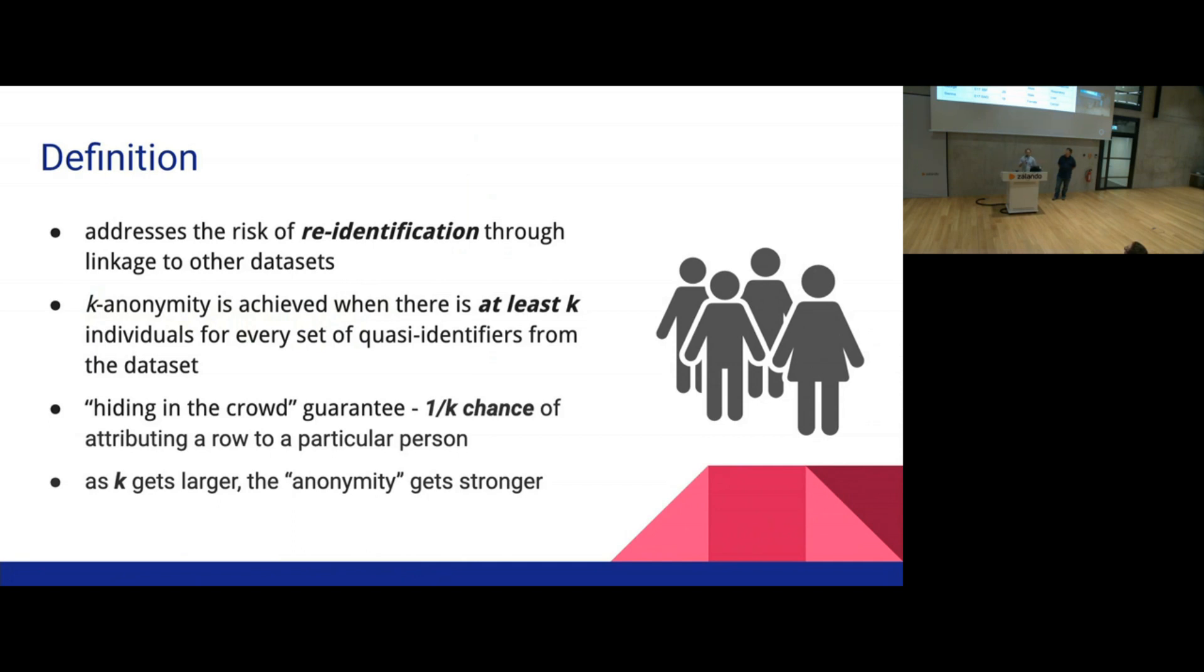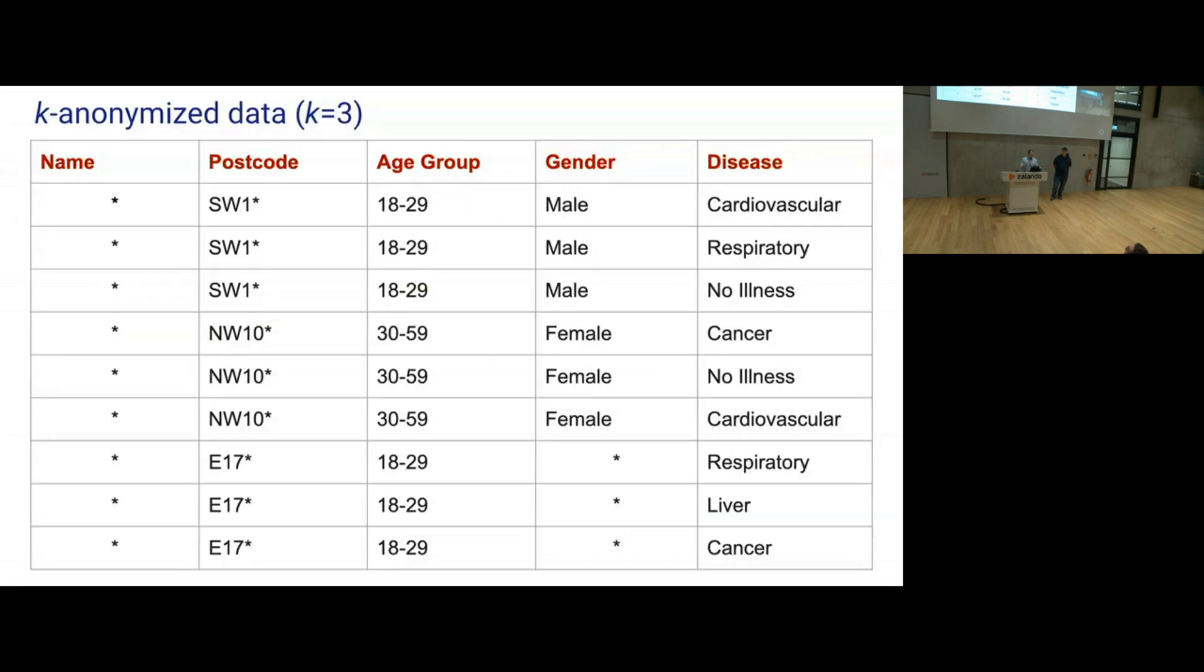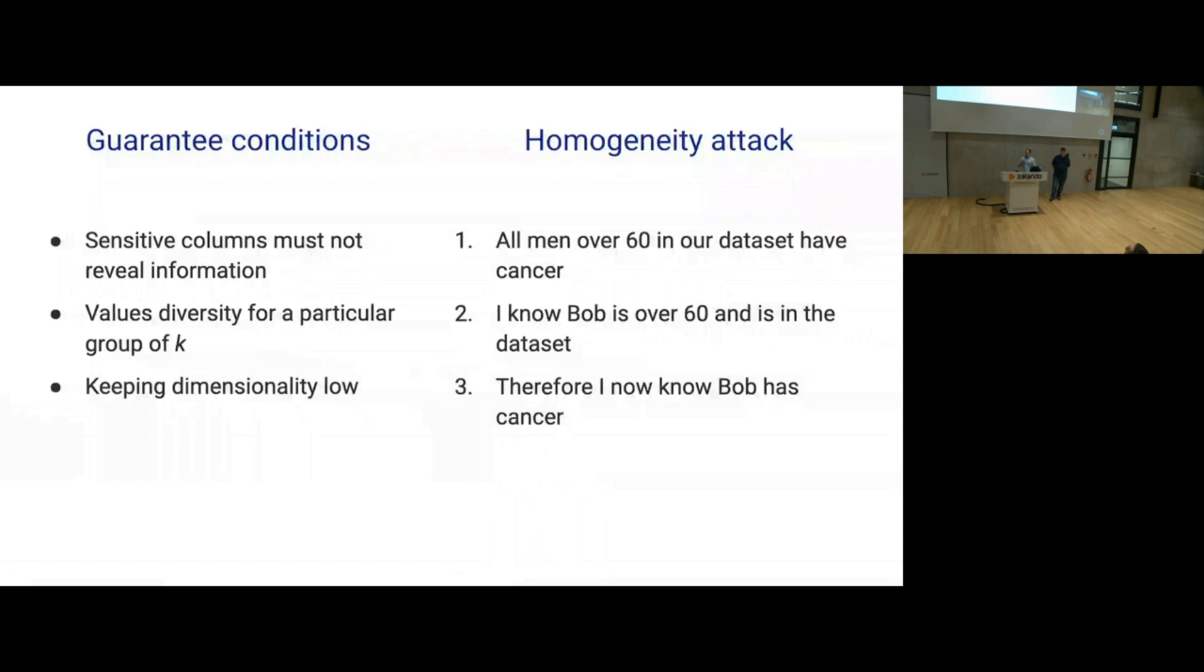What does it mean as an example? You see a medical dataset example. We have some persons, postcode, age, gender, and disease. The name is a direct identifier—it's a one-to-one mapping. Things like postcode, age, and gender are general identifiers, also quasi-identifiers. The disease is your sensitive attribute which you want to study and keep in the dataset. This is an example of an anonymized dataset. You can see that names disappear because it's a direct identifier. Now there's an age group, not exact age. Postcodes don't have exact numbers and so on.